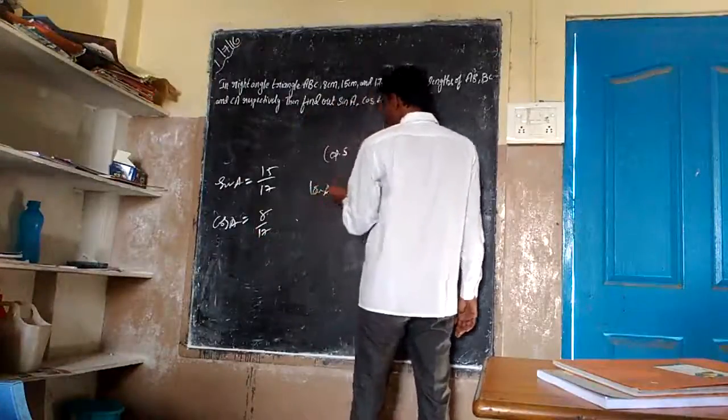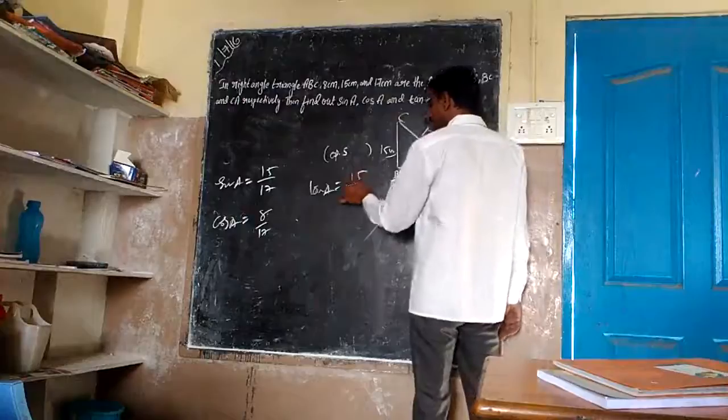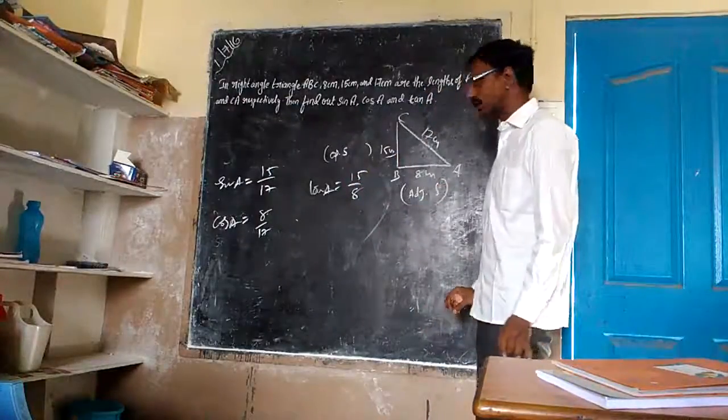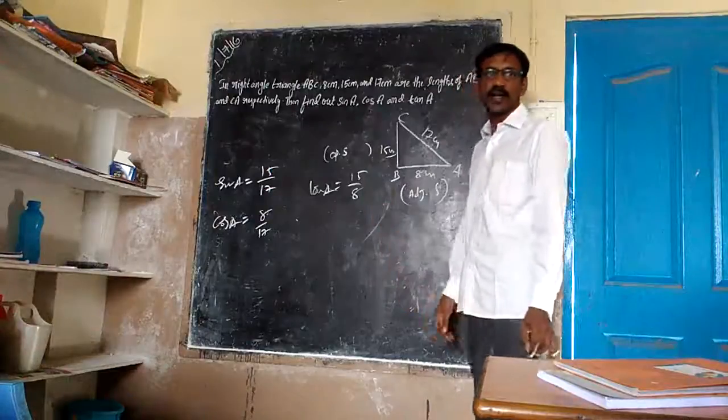Tan A. 15 by... yes. Tan A is equal to opposite side over adjacent side. The reciprocal of this is cot A.